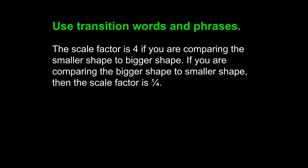Let's take a look. The scale factor is 4 if you are comparing the smaller shape to bigger shape. If you are comparing the bigger shape to smaller shape, then the scale factor is 1 to 4. We have two sentences, and two sentences that contain different ideas often require strong transition. We know that the first sentence shows something different from the second, and that means we are dealing with contrast.